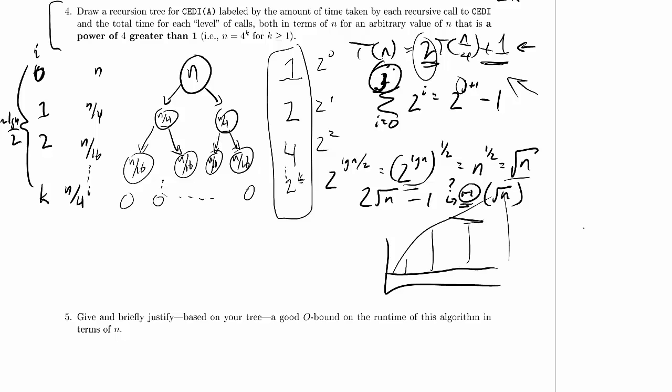Essentially what we've done now is we've found some function that bounds those spikes nicely, and that function is square root of n. So this is a good big O bound, big O of square root of n.